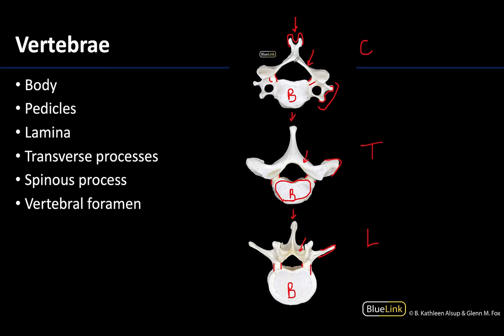All of these vertebrae are going to have a vertebral foramen. If you join all these vertebral foramina together throughout the vertebral column, you get the vertebral canal, where you have the spinal cord, the roots of the spinal nerves, meninges, and epidural fat sitting in that region.